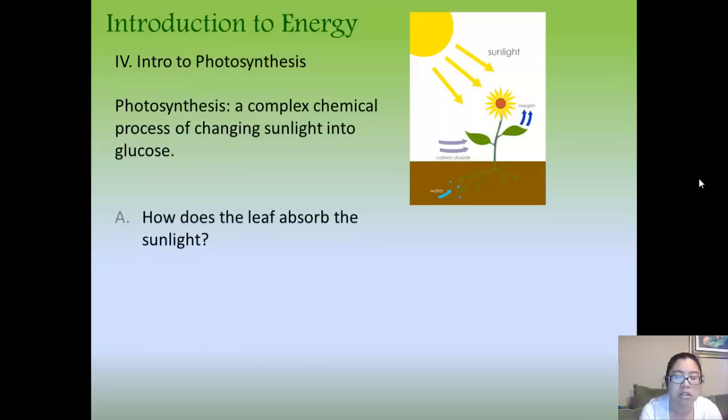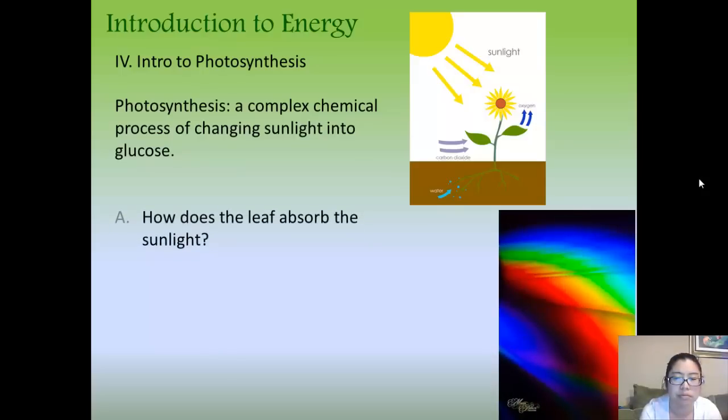So how does the leaf absorb sunlight? You think, oh, white sunlight, yes. No, sunlight is actually a combination of multiple colors. It has multiple wavelengths: red, yellow, green, blue, and violet.